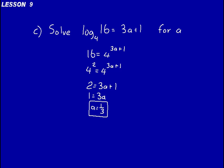So we've solved for A in that problem. The only way we could really solve for that was knowing our logarithm rules — our relationship between the logarithmic form and the exponential form.